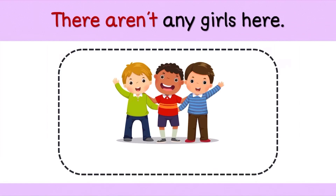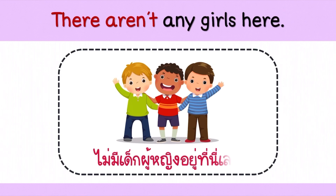There aren't any girls here. ประโยคนี้แปลว่า ไม่มีเด็กผู้หญิงอยู่ที่นี่เลย นักเรียนสังเกตไหมคะว่ามีแต่เด็กผู้ชาย เราก็สามารถใช้ประโยคปฏิเสธว่า There aren't any girls here คำว่า here แปลว่า ที่นี่ หรือตรงนี้ค่ะ